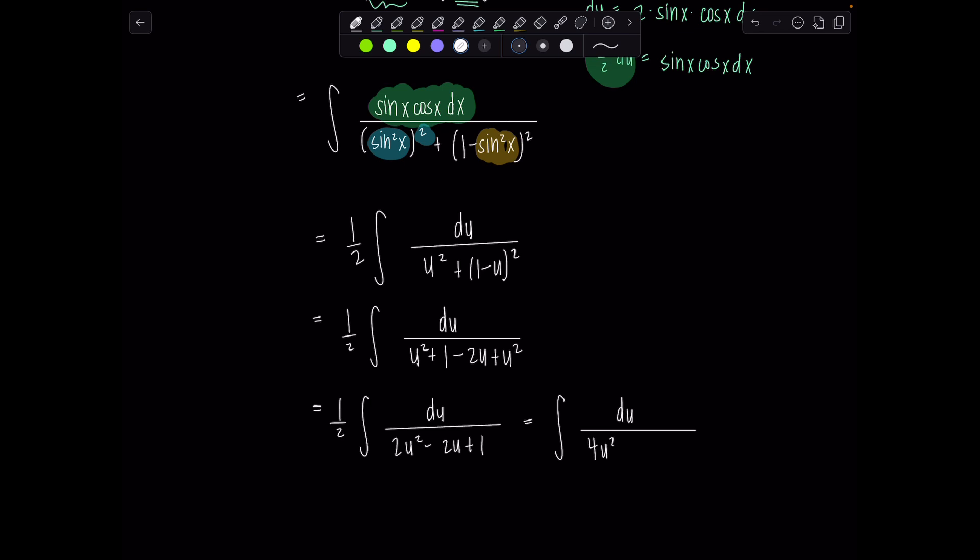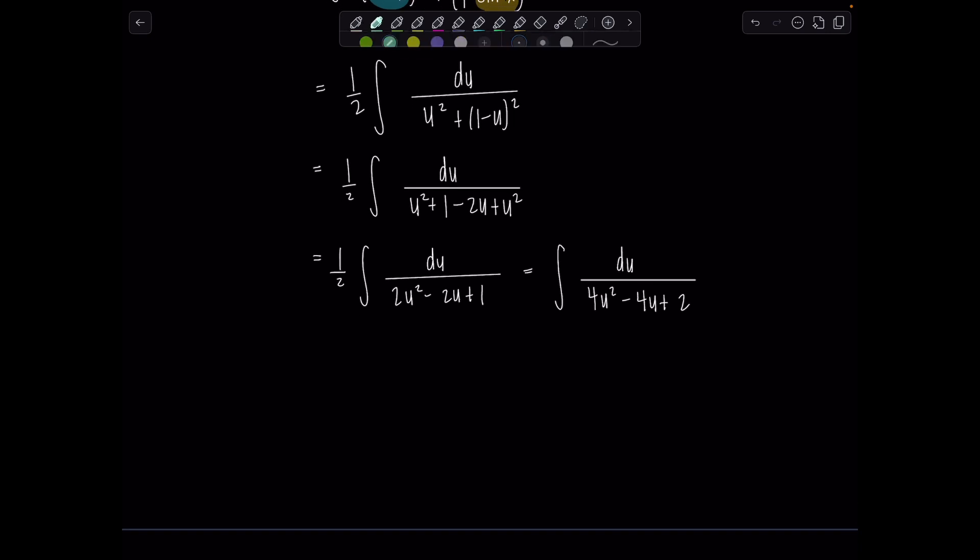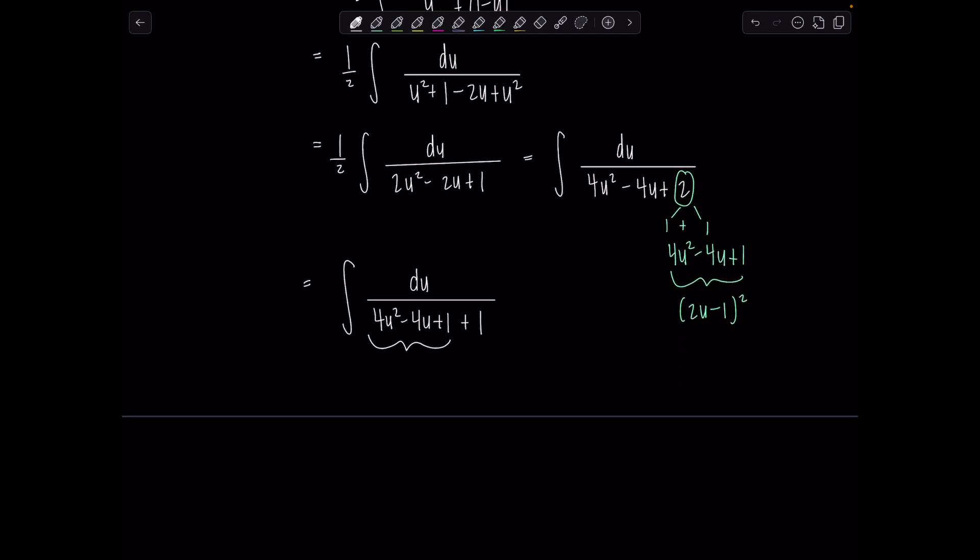So watch this: du over four u squared minus four u plus two. And now I'm super excited, you guys, because look, four u squared minus four u plus one, that's a perfect square trinomial. That factors into two u minus one quantity squared. So then I just need to break up this two into one plus one, and then I'm good to go. So let's rewrite things as du over four u squared minus four u plus one plus one, and then boom, here's my perfect square trinomial. That was slick.